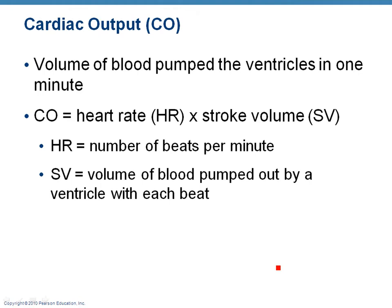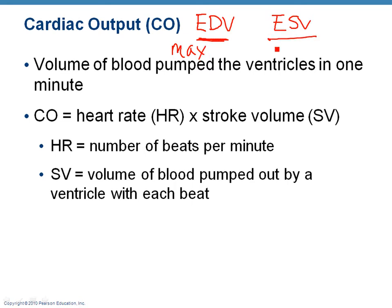We've been through the events of the cardiac cycle, and a couple of things I want you to recall right away: your end diastolic volume and your end systolic volume, referring to the volume of blood in your right and left ventricle combined. Your EDV is the maximum volume of blood in the ventricles. ESV, or end systolic volume, is your minimum volume of blood left over in the ventricles after ventricular systole has occurred.